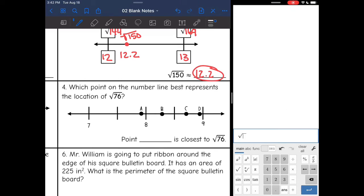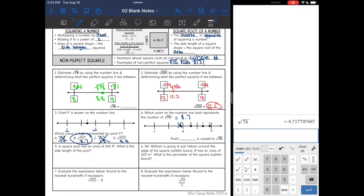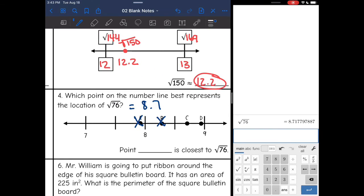Square root of 76. And I get about 8.7. So it needs to be between 8 and 9, so point A is out, and it needs to be closer to 9. So B is out, but it's not 8.9, so this one's probably best, point C.